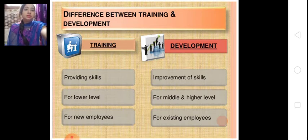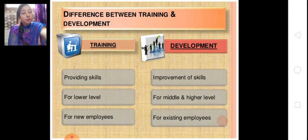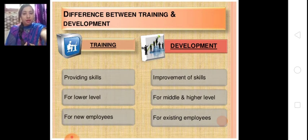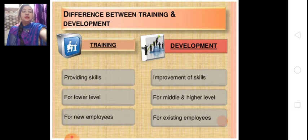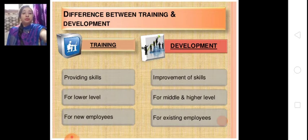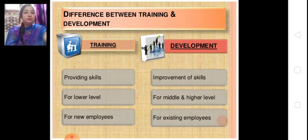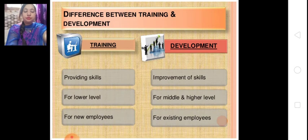The most important difference is between training and development. Training means providing the skill of doing a particular job. Development means improvement of the skill the employee already has. Training is for lower level and development is for middle and higher levels. Training is for new employees — we provide them with skills to do work. Development is for existing employees — persons who are already in the organization and already trained — we develop their skills further in a more efficient manner.